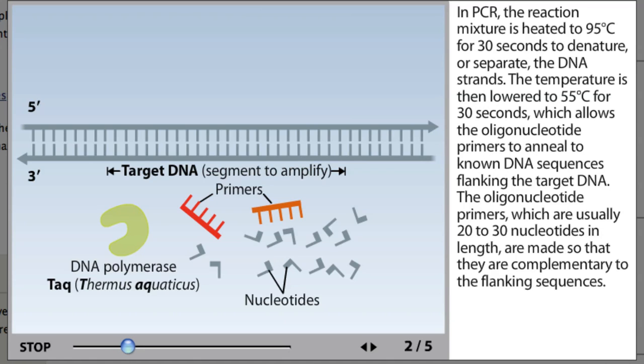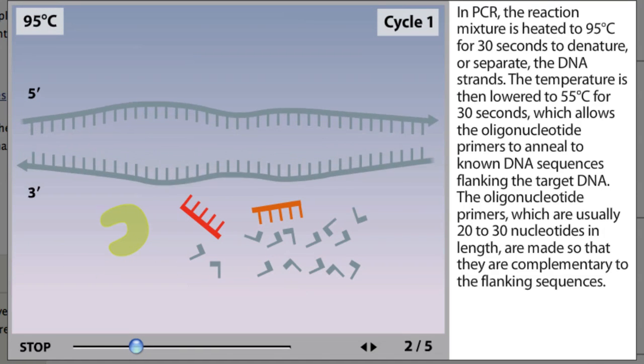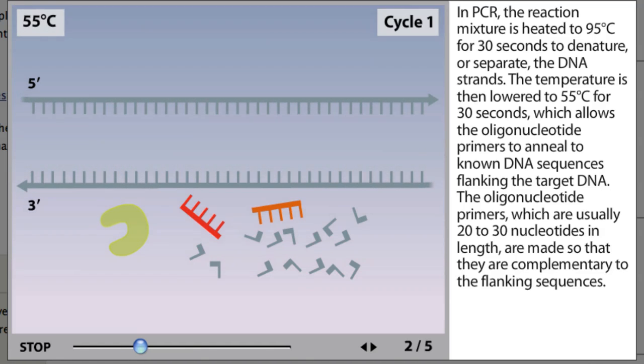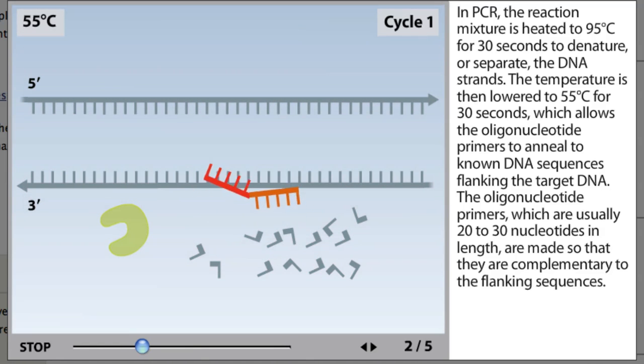In PCR, the reaction mixture is heated to 95 degrees Celsius for 30 seconds to denature or separate the DNA strands. The temperature is then lowered to 55 degrees Celsius for 30 seconds, which allows the oligonucleotide primers to anneal to known DNA sequences flanking the target DNA.